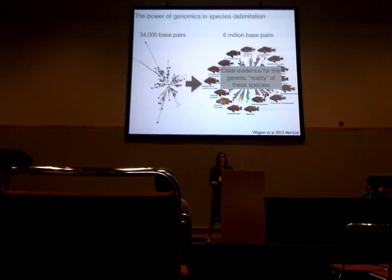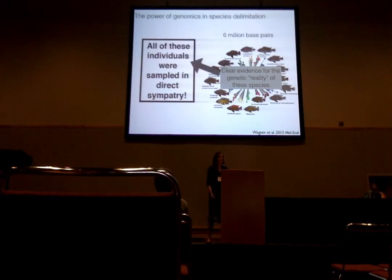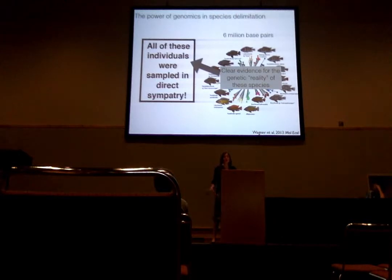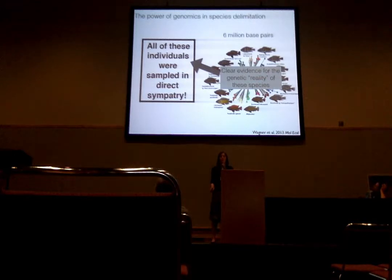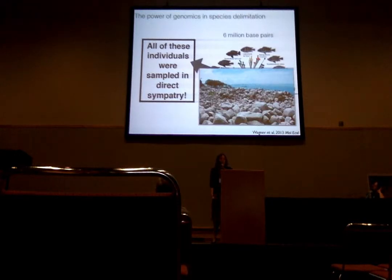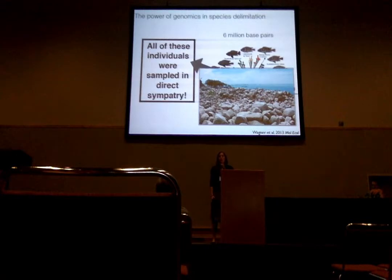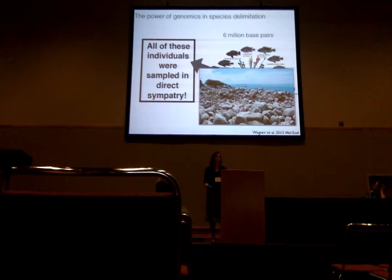Crucial to this interpretation is the fact that we have sampled all of these individuals in direct sympatry, so there's no opportunity for geographic variation within a species to impact our interpretation of species boundaries. By direct sympatry, I mean that if you stand on the shore of Makobe Island in Lake Victoria and jump into the water, you would be able to collect all of these species within a few tens of square kilometers. We've sampled all of these species from the same nets in exactly the same place.